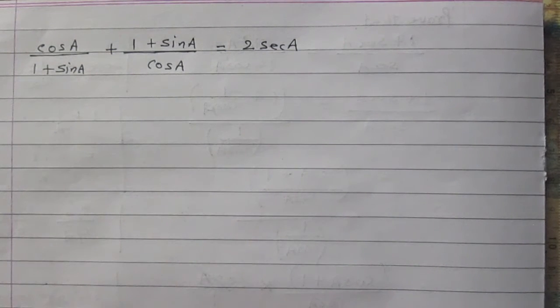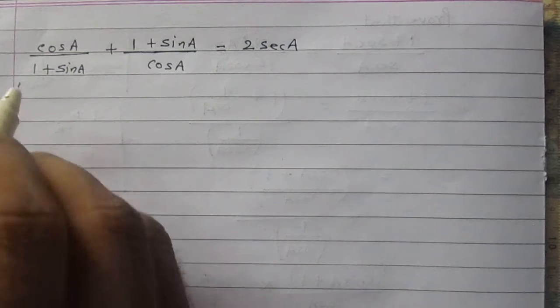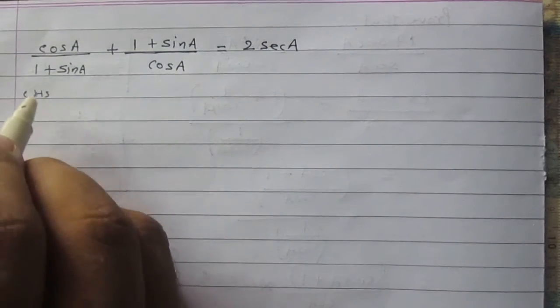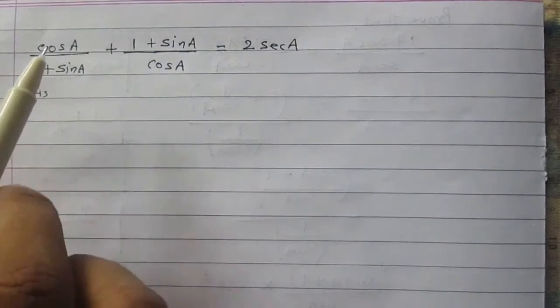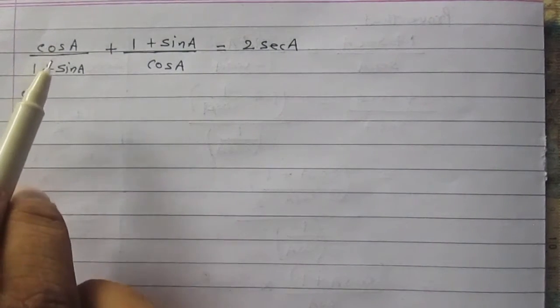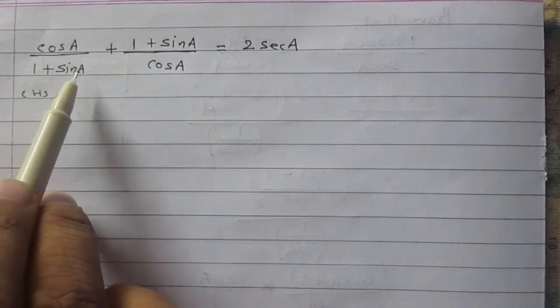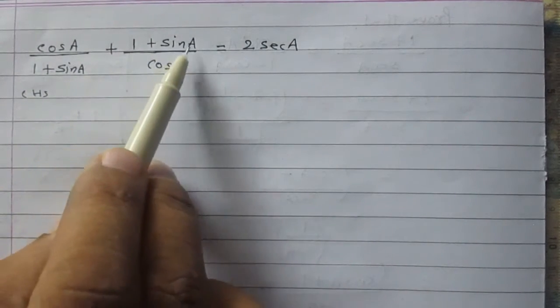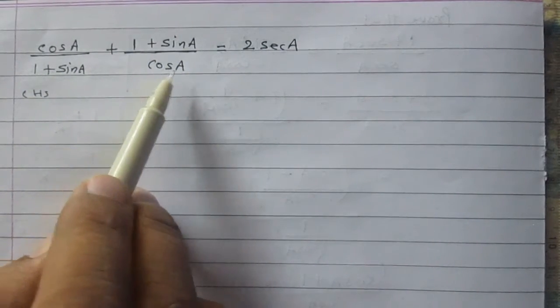Let us consider the left hand side. It is cos A upon 1 plus sin A, plus 1 plus sin A upon cos A.